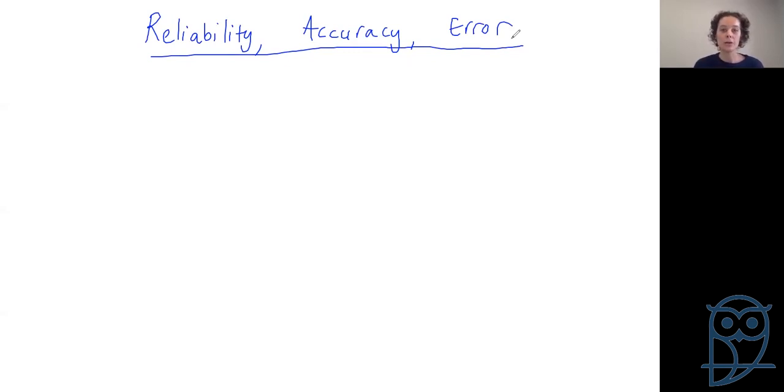We're going to start with running through what's reliability and accuracy, then we're going to move on to error, and then depending on how fast we go, I've also got a wonderful complicated past paper for us to work through and actually start pulling these things out from.